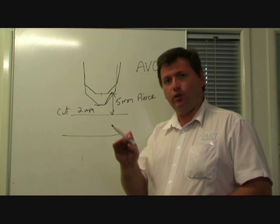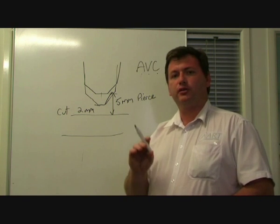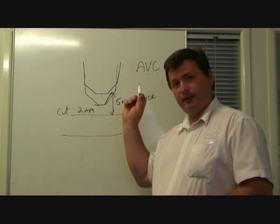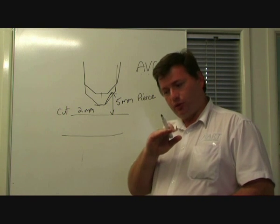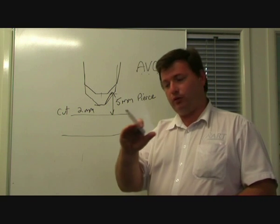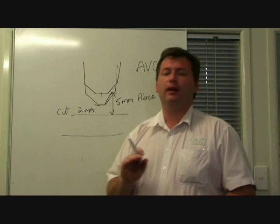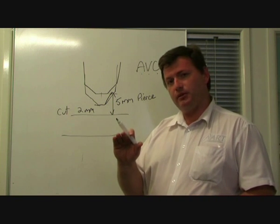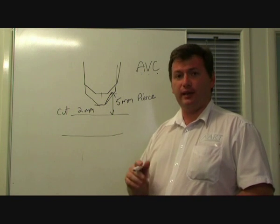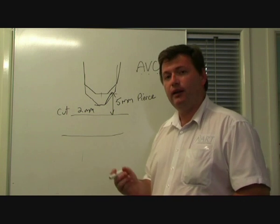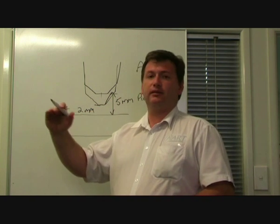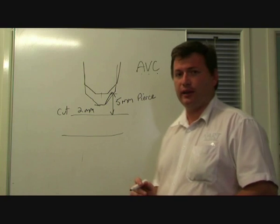As the machine comes into a corner or a tight curve, the controller will actually lock out the AVC. This will mean that the torch maintains a constant height through all those complicated maneuvers. It's only once the machine reaches, once again, 50-60% of its programmed feed rate, it will then allow the AVC to begin tracking the material again.